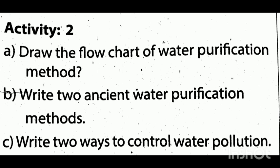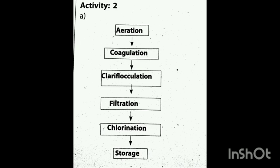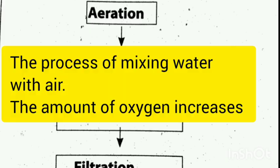Let's talk about the flowchart of water purification method. Write two ancient water purification methods. Write two ways to control water pollution. The important steps of water purification method in the flowchart are: coagulation, clarification, filtration, chlorination, and storage.